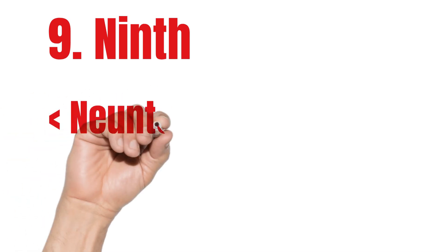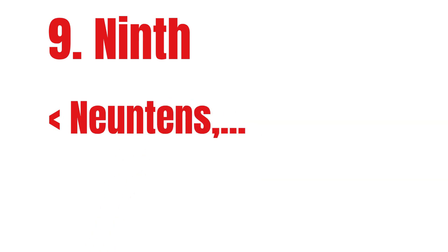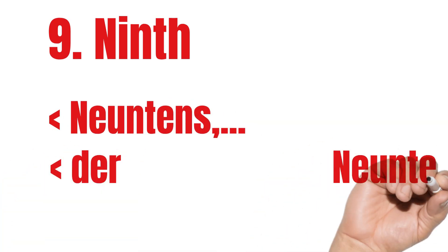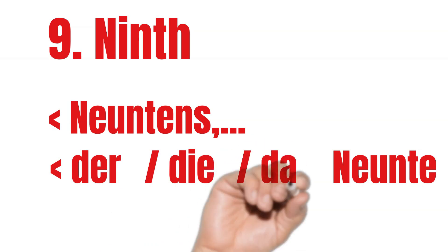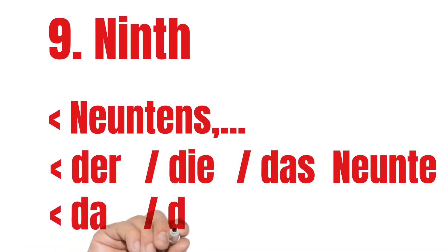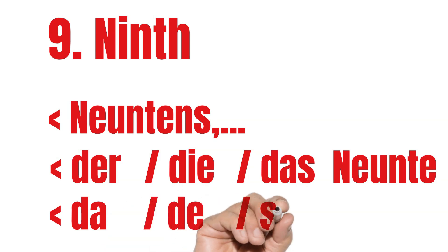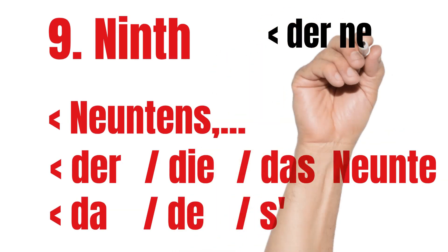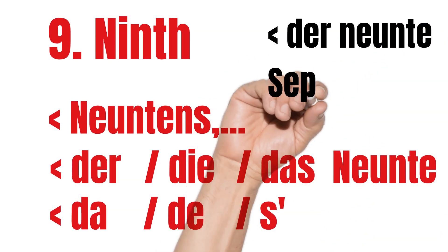Ninth. For numbered lists, ninth means Neuntens. With articles: der Neunte, die Neunte, das Neunte. And in dialects: der Neunte, die Neunte, das Neunte. For the months, we choose September — the 9th of September is der Neunte September.